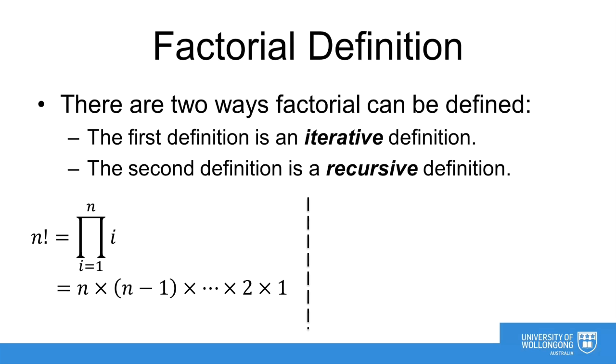The second definition we can use for the factorial function is a recursive definition. This splits the definition into two possible cases. The first case states simply that when n equals 0, n factorial equals 1. This is often called the base case or the trivial case.